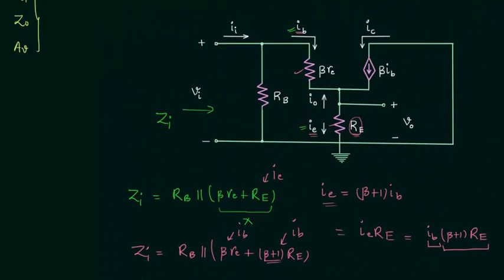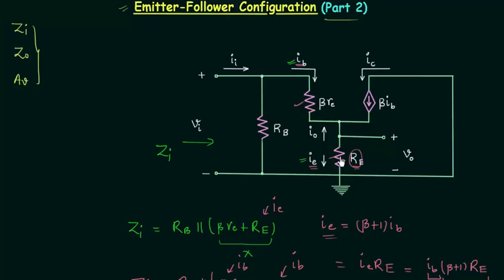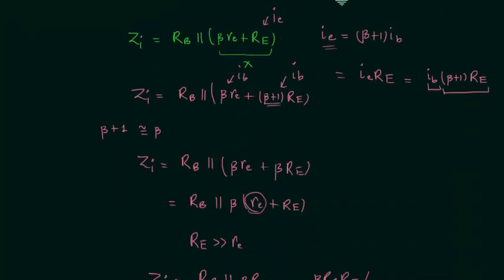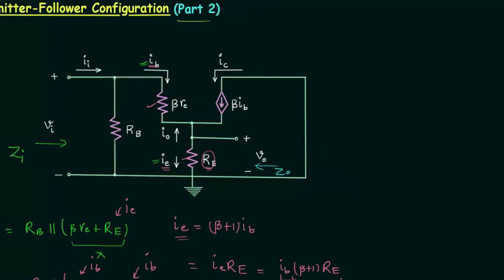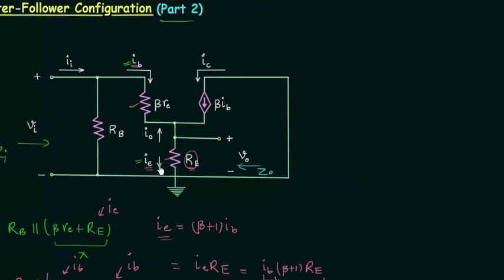The key point to be careful about is the series combination of these two resistances. You need them in series, and for that you have to modify the circuit — instead of resistance RE you should use (beta + 1) * RE. Now we will calculate the output impedance. The output impedance is the impedance seen from the output terminals, so let's find out ZO by first calculating the emitter current IE.